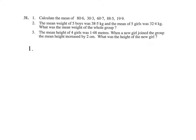So to calculate the mean we add all these numbers up: 80.6 plus 30.3 plus 60.7 plus 88.5 plus 19.9, and then we divide by 1, 2, 3, 4, 5. That gives 280 over 5, which is 56.